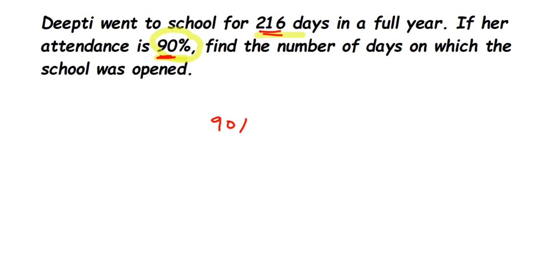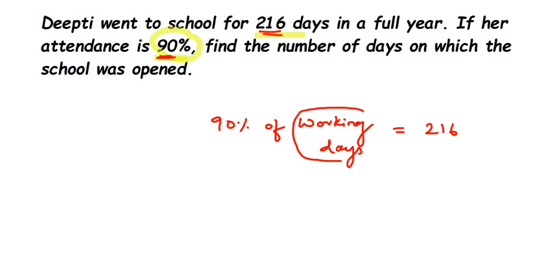So 90% of working days — that is, the days the school was open — is equal to 216. We have to find out the value of working days. This working days is unknown to us, so I'm going to assume a variable x. Once we get the value of x, that is the number of days the school was open. Let's start solving it.